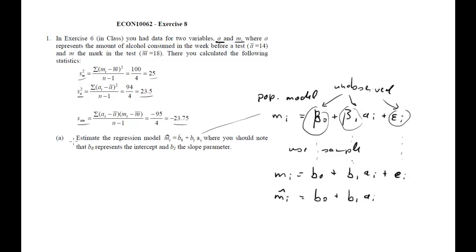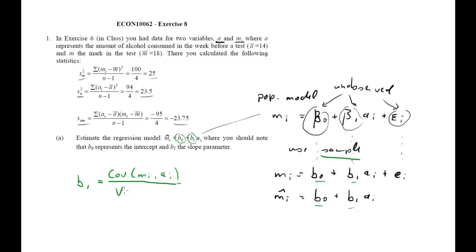We want the estimates — the question is to estimate the regression model, which means we want to find b0 and b1 using sample information. You need to know the formula. b1 is the covariance between m and a — our dependent and explanatory variables — divided by the variance of the explanatory variable, which is a.